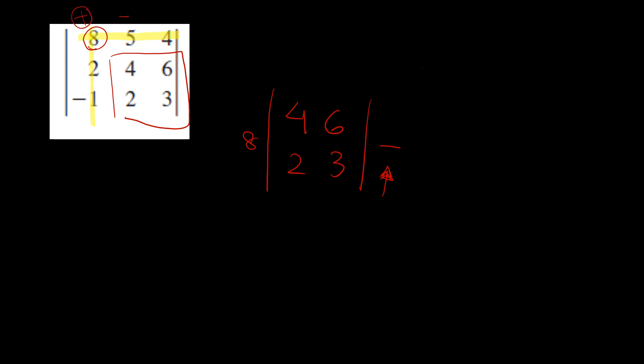So you can write it on top just to make sure you don't forget. Write positive, negative, positive. So you know the first one is positive, the second one is negative, and the third one is positive. Now let's do the second one. For the second one, we'll have to cross the second column and the first row.